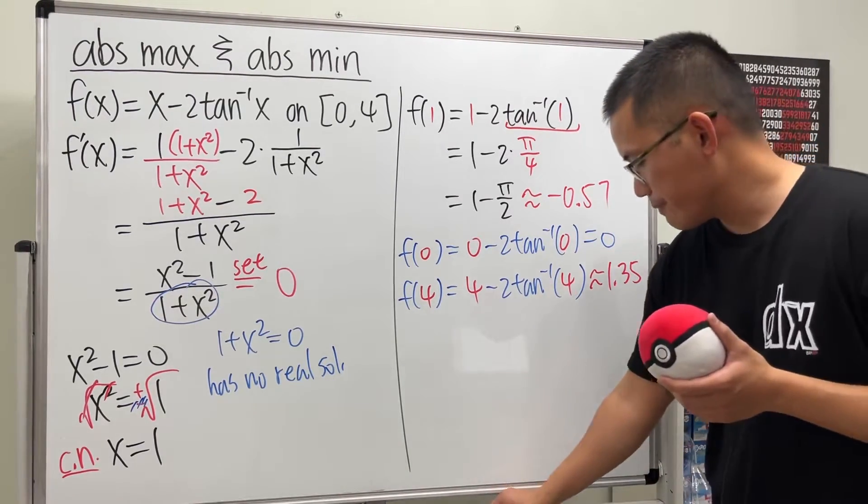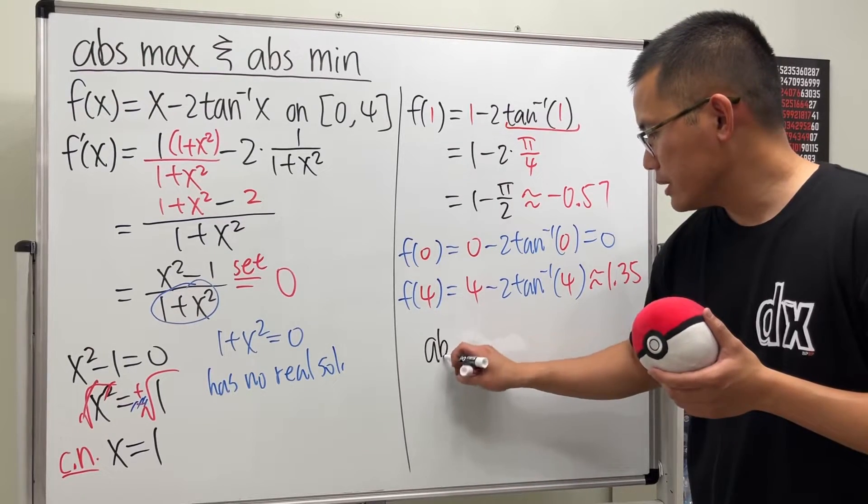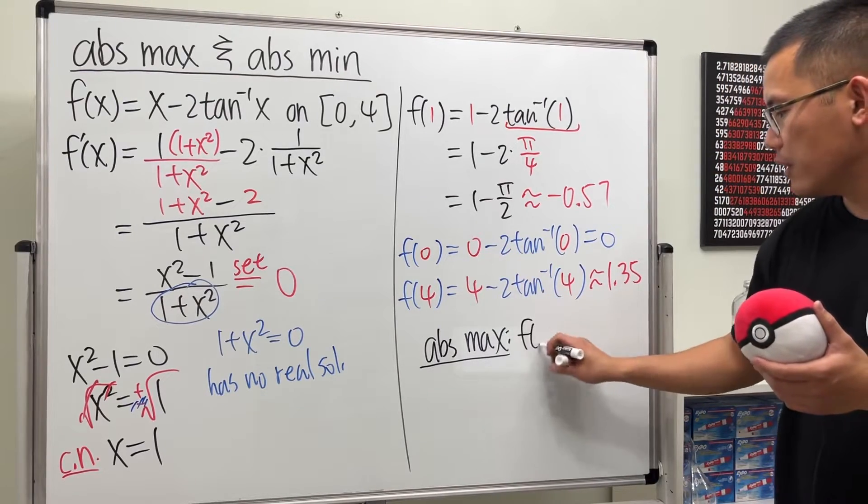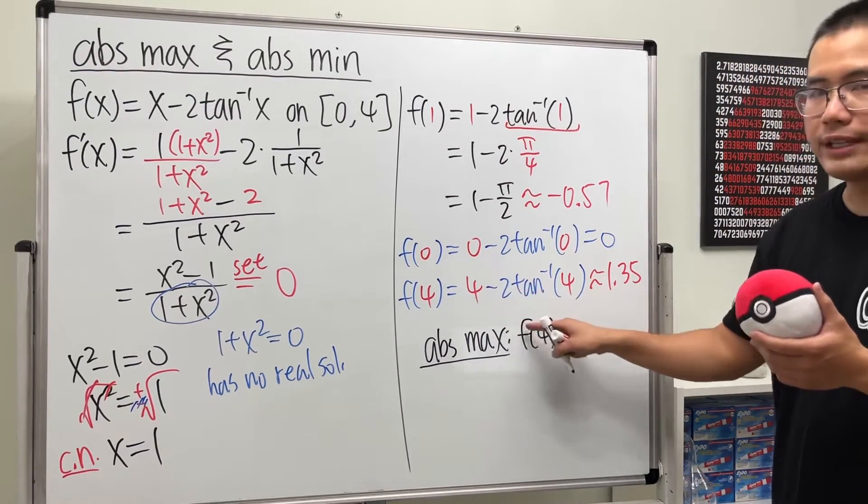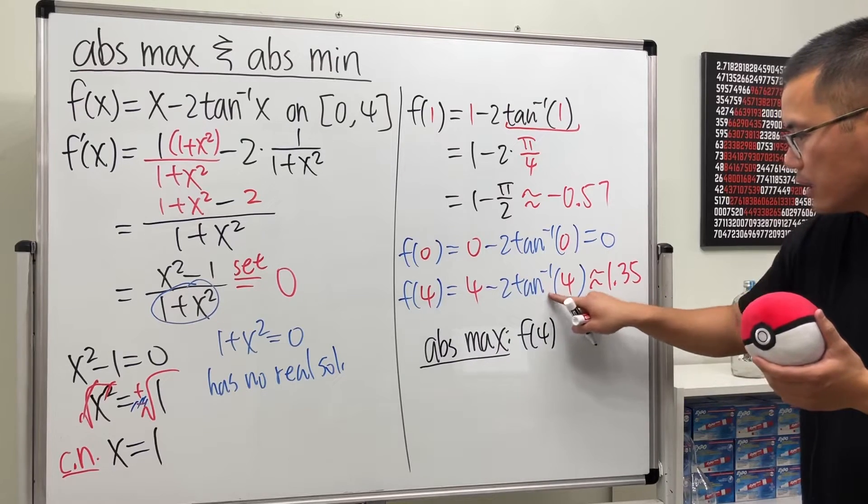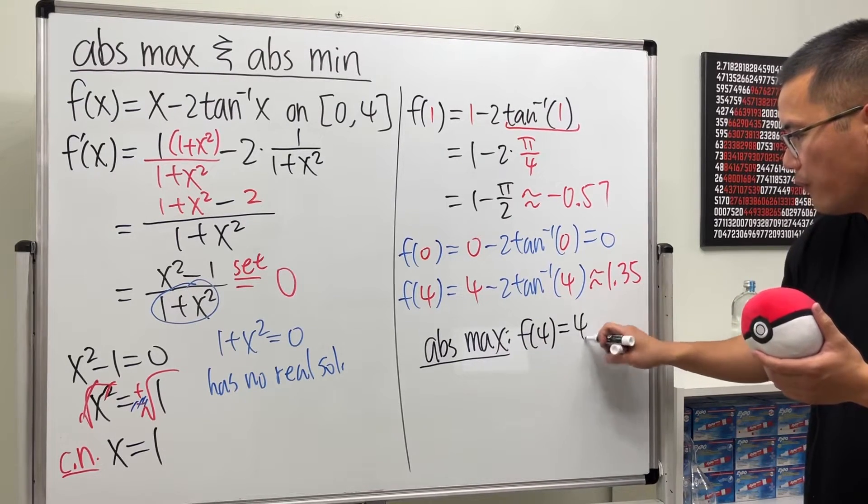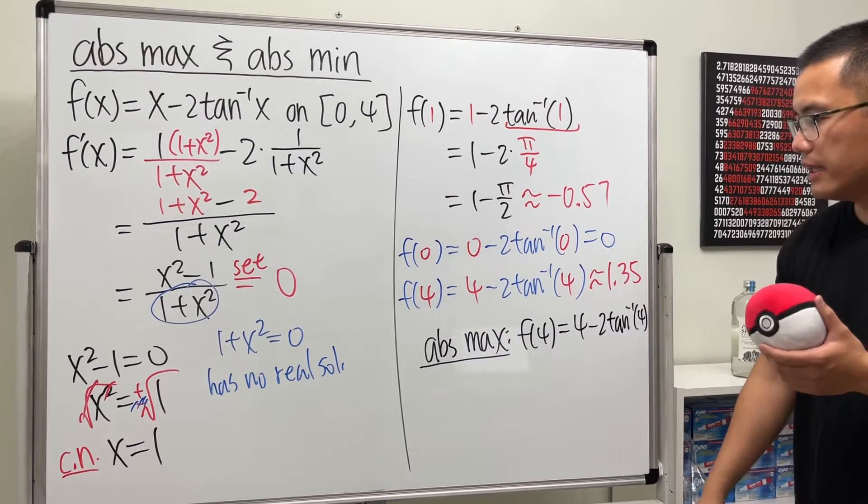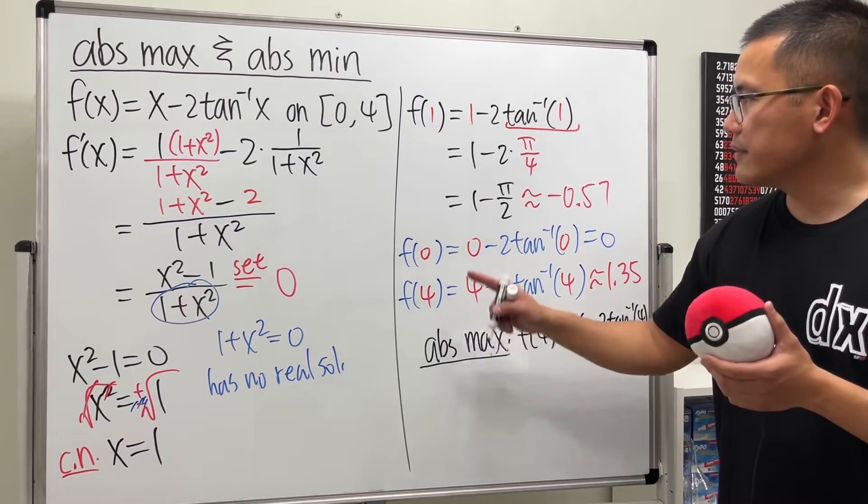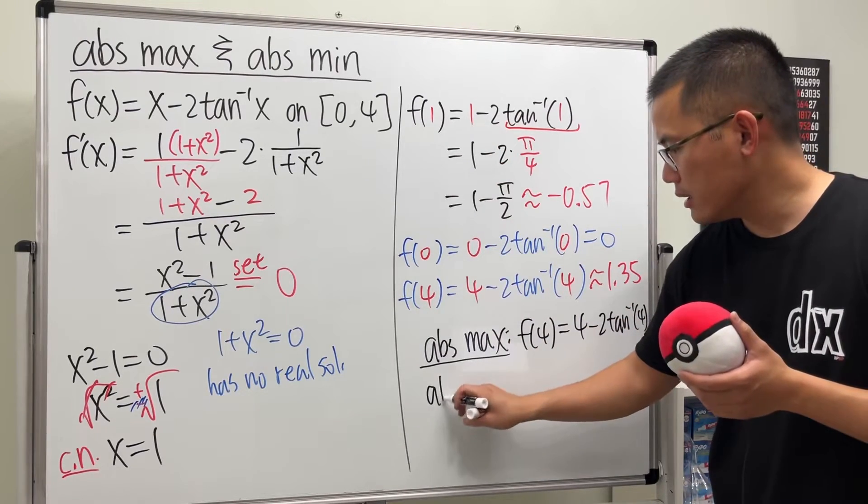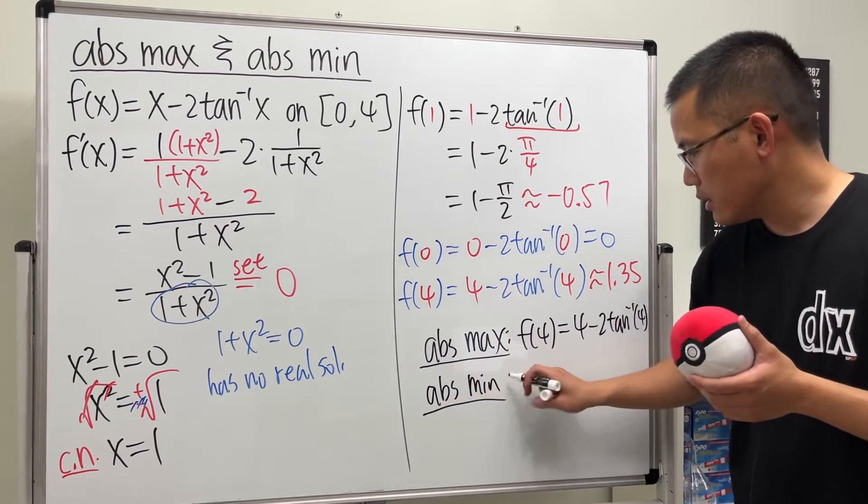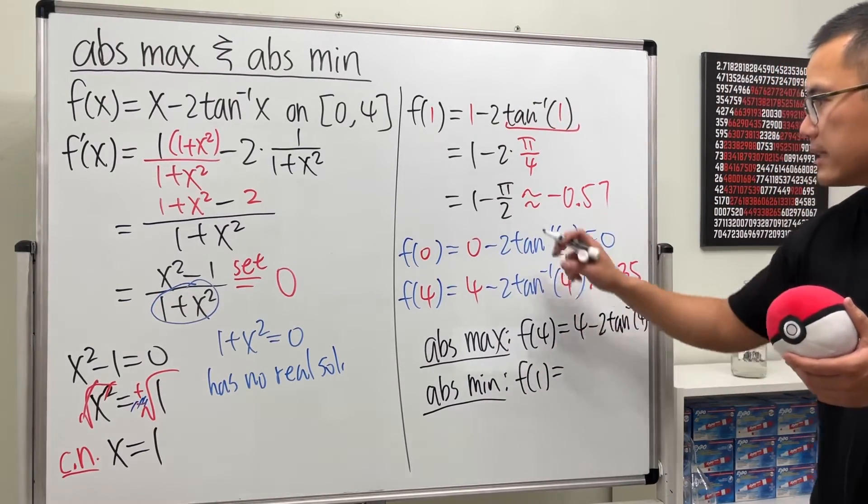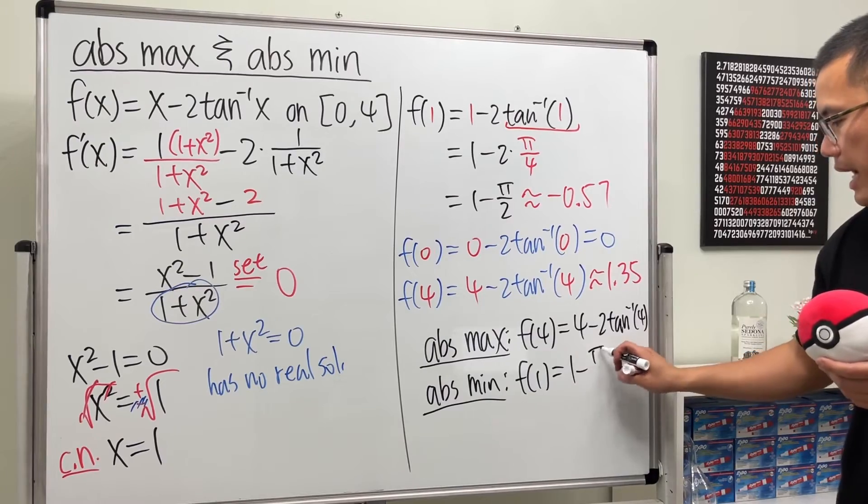Absolute max: we have f(4), and I'm just going to write down the exact answer, which is 4 minus 2 times inverse tangent of 4. And then we have the absolute min: f(1). And that's 1 minus pi over 2. And this will do it.